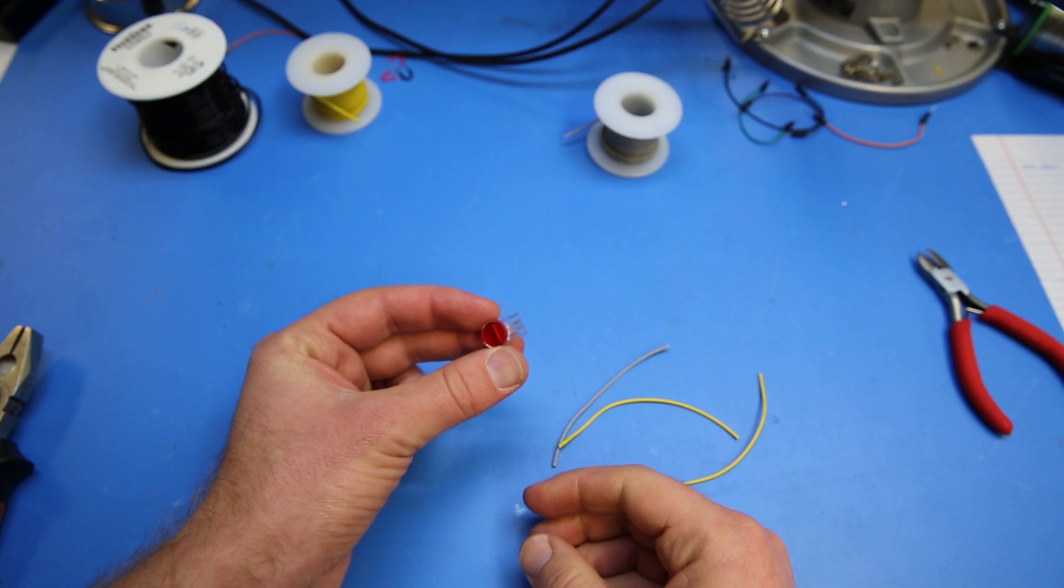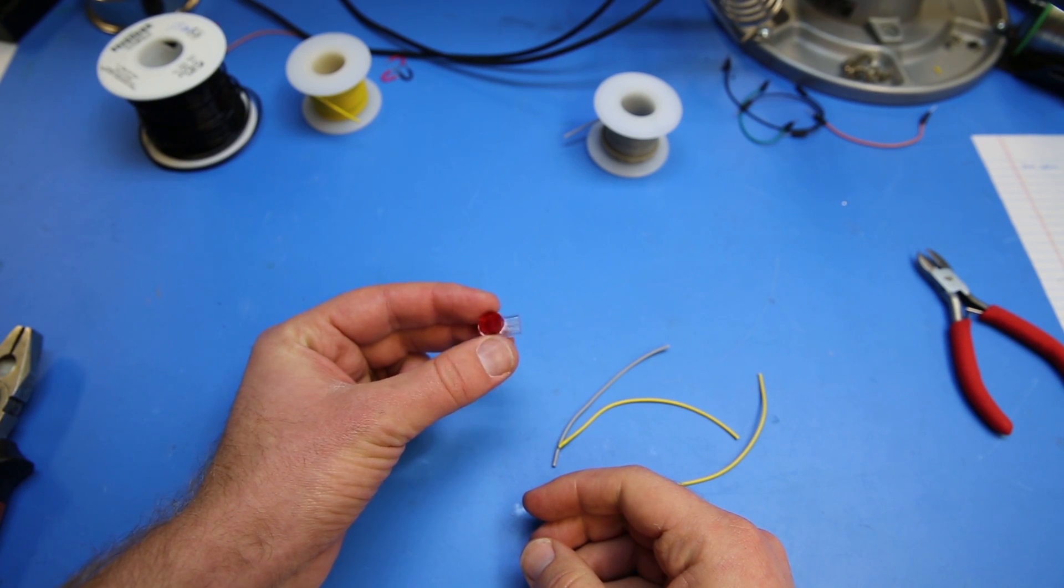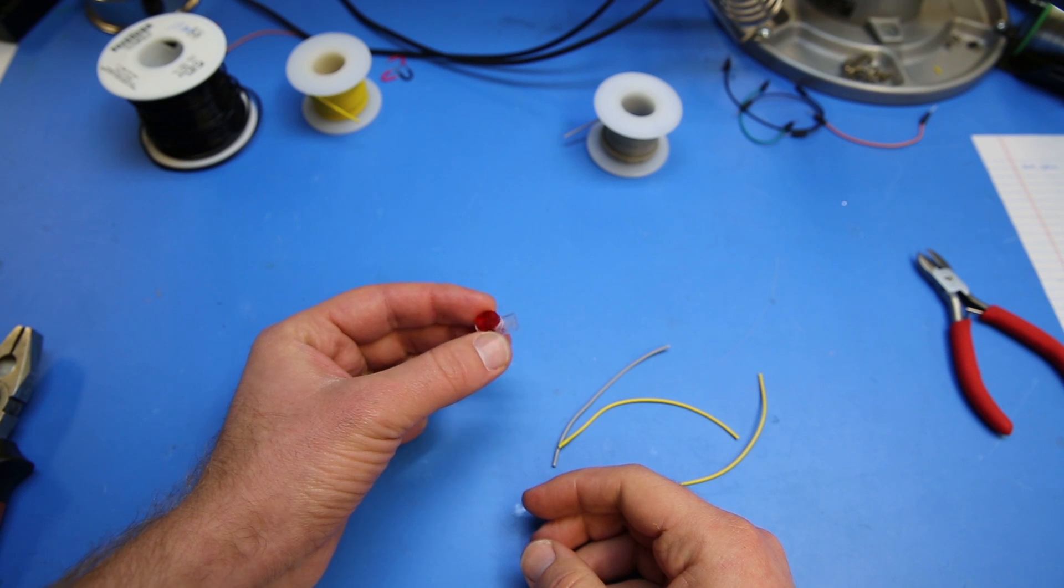Alright, so here we have the three wire butt splice connector. It's again for 19 gauge to 26 gauge.